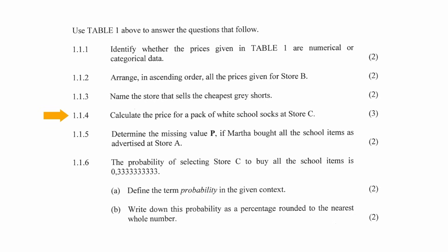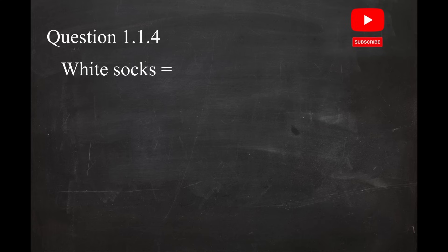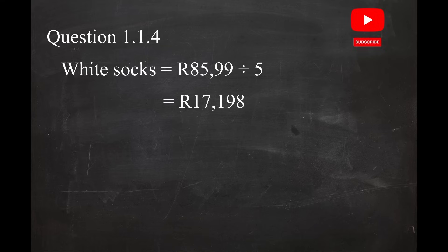In question 1.1.4, you have to calculate the price of a pack of white school socks at Store C. From the table, we can see that at Store C, white socks are sold at a cost of $85.99 for 5 packs. So the cost of one pack of white socks is $85.99 divided by 5 packs, and this equals a cost of $17.98. Rounding this value to two decimal places will give you a cost of $17.20.